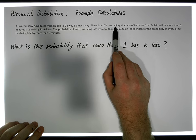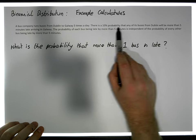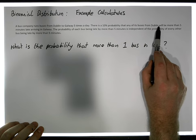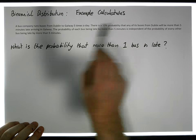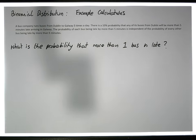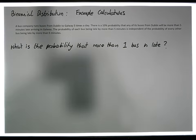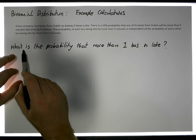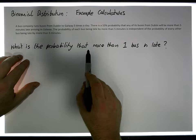to Galway has a 10% probability that any one of these buses will be more than five minutes late arriving in Galway. And what we'd like to calculate is: